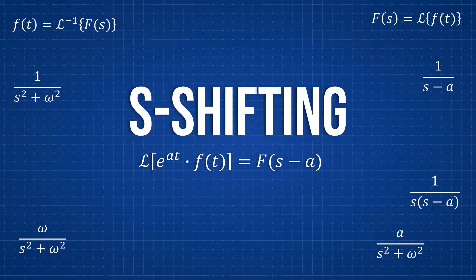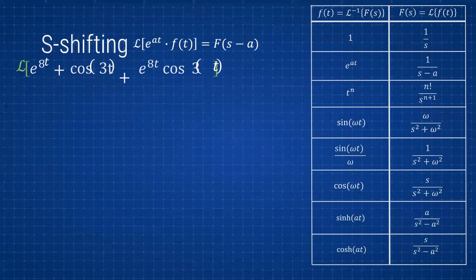For s-shifting, the main idea and main premise is that if we're taking the Laplace of some function of t that's being multiplied by an exponential in the t-domain, then the Laplace of that function will just be shifted by some amount in s.